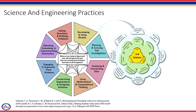The framework uses the term 'practices' instead of a term like 'skills' to emphasize that engaging in scientific investigation requires not only skill but also knowledge that is specific to each practice. There are eight science and engineering practices. One quick example is developing and using models. The models students make and use will help develop explanations about natural phenomena. Models make it possible to go beyond what can be observed and enable students to make predictions to test hypothetical explanations. Each new standard for the Arizona document is linked to one of the science and engineering practices.